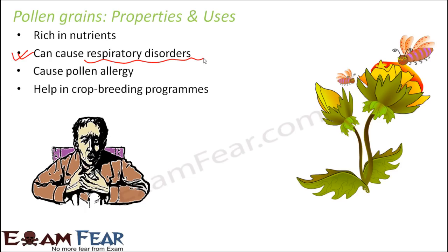Pollen also helps in crop breeding programs. Pollen grains are very easy to store, and it is their speciality that they can be stored for years together — you just have to keep them in liquid nitrogen. When you can store pollen grains, you have the male gametes stored with you. So you can pick up the male gametes of all the desired plants and keep them in a pollen bank. When you want more plants of a specific variety, you can make use of those pollen grains, which means it helps in crop breeding programs.